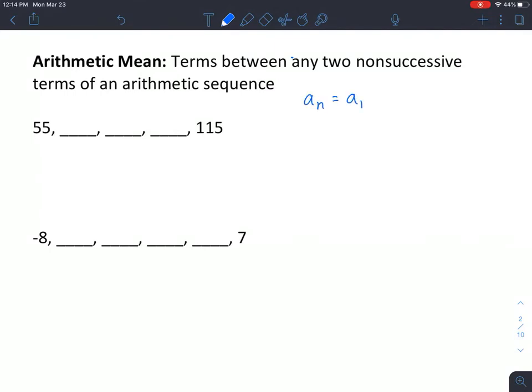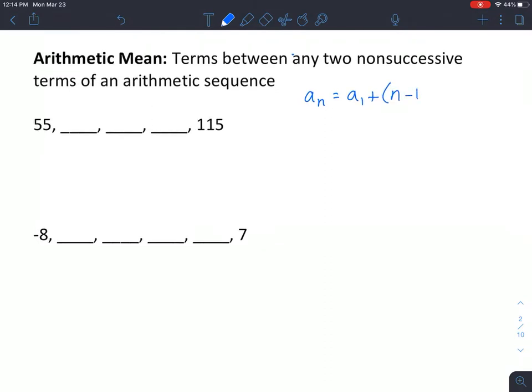a sub n equals a sub 1, which is the first term, plus the number of the term minus 1 times the difference to find each term.